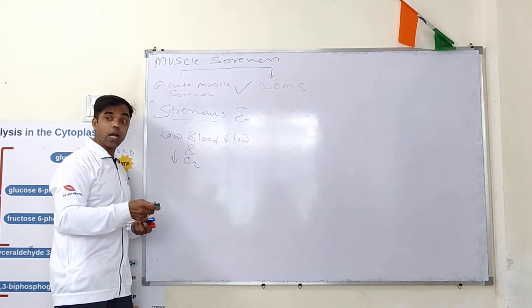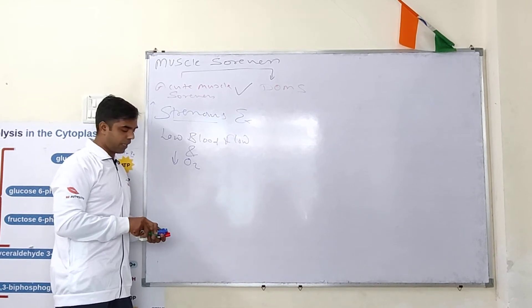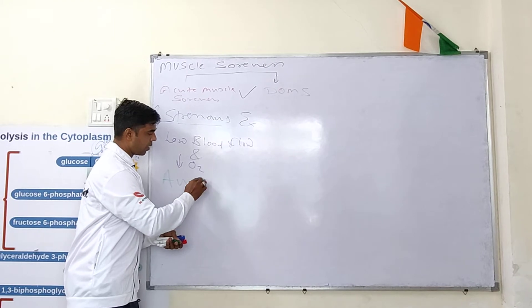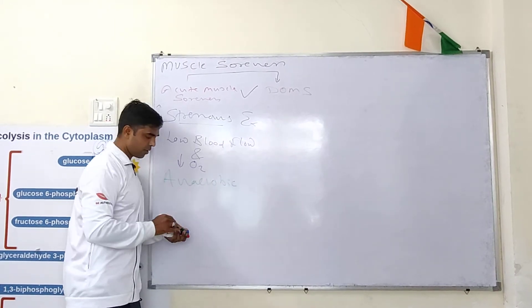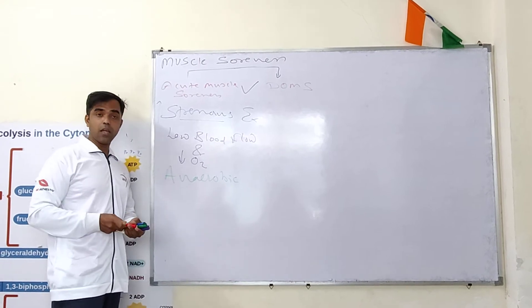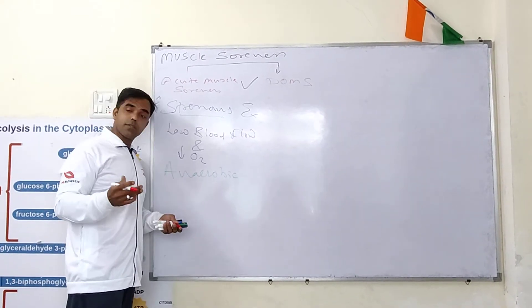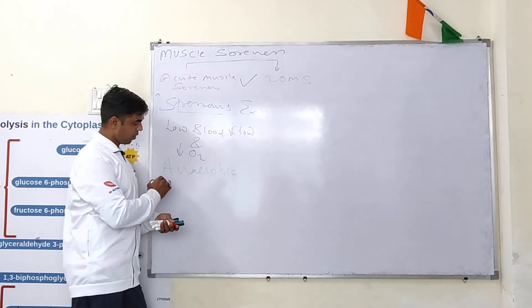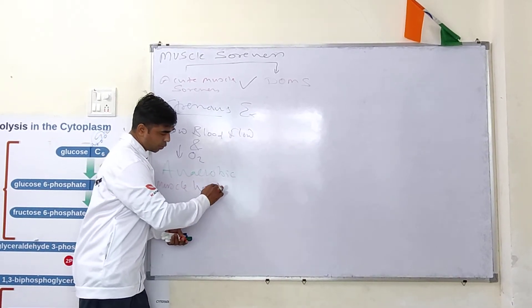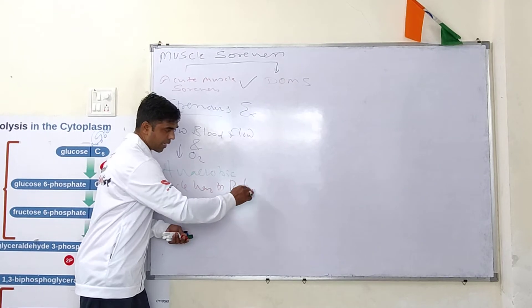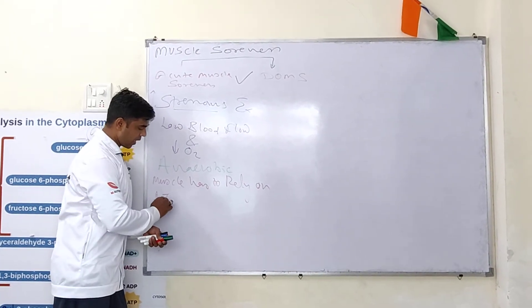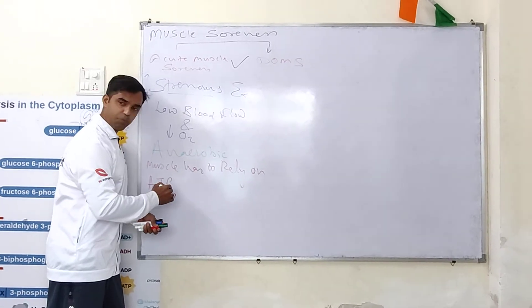Your energy pathway is now anaerobic. Whenever there is an anaerobic pathway, your muscle has to rely on ATP coming from this anaerobic pathway.